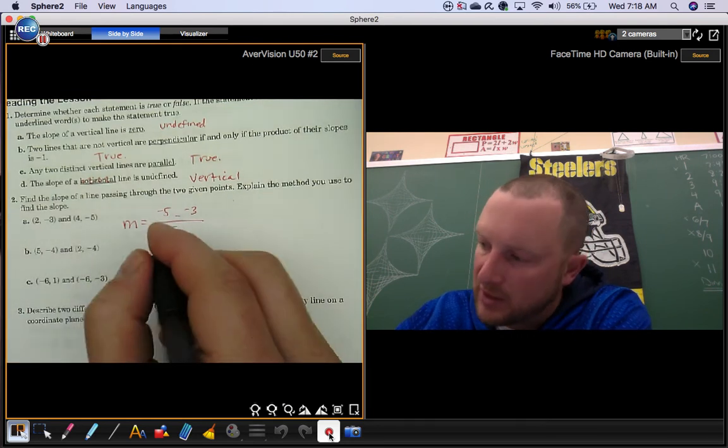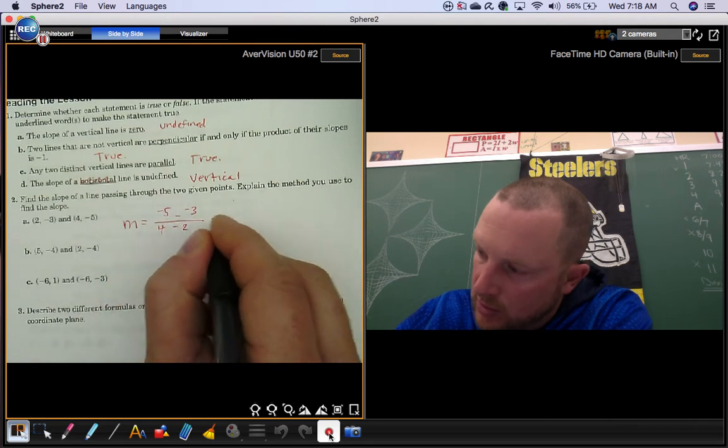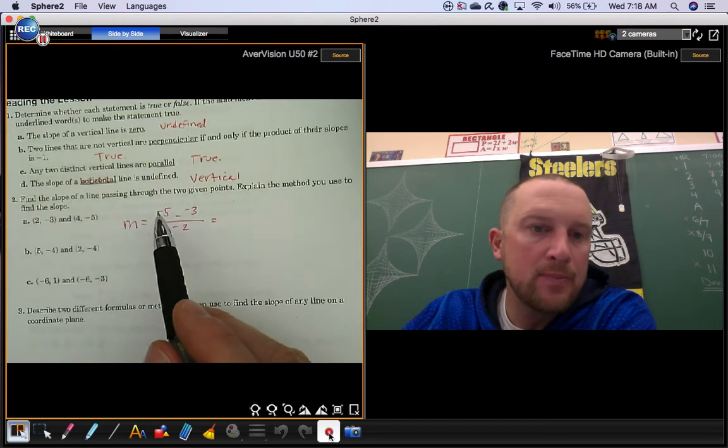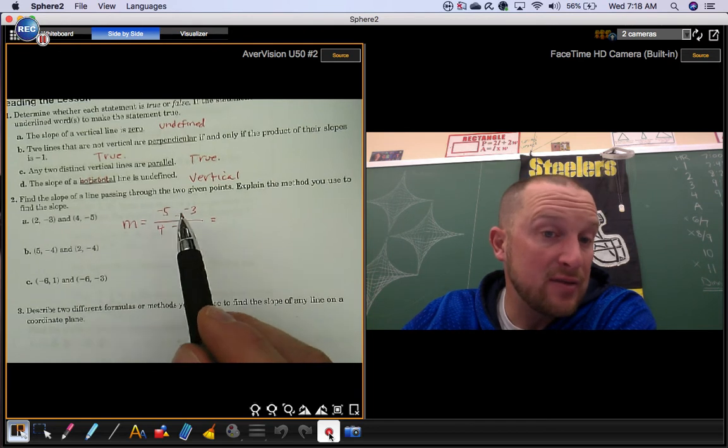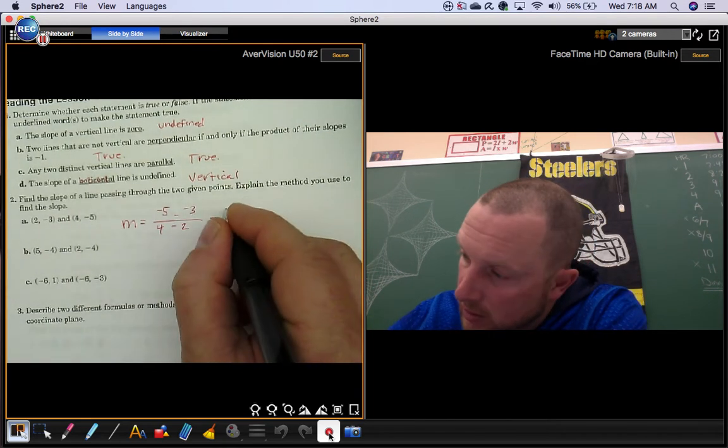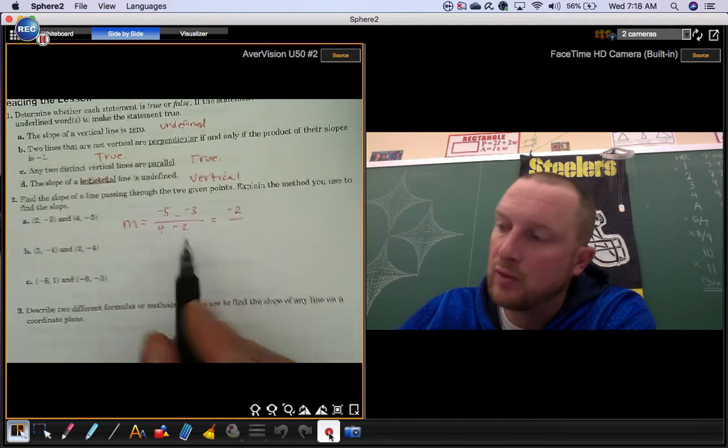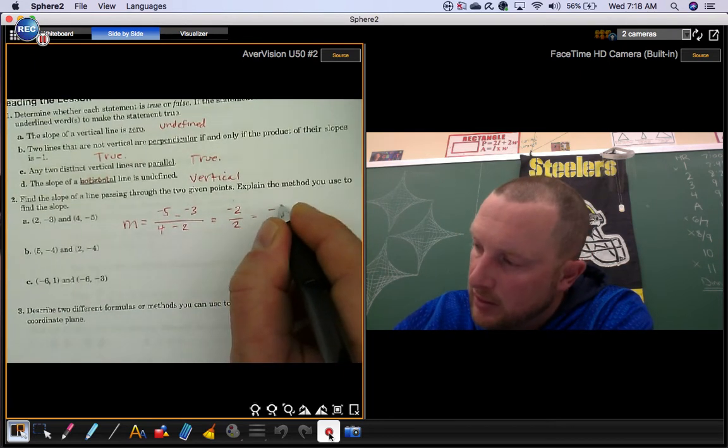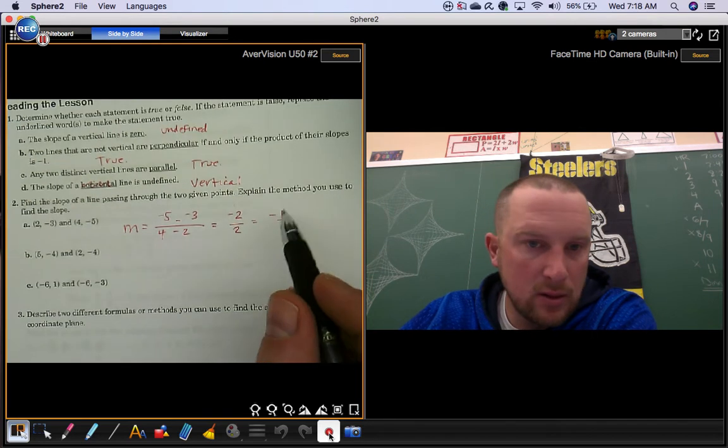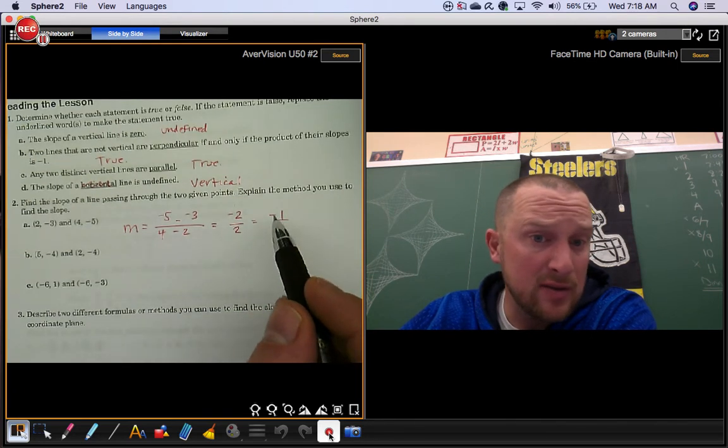We're going to subtract the x in the same order: four minus two. Negative five minus negative three, that's the same thing as negative five plus three. Four minus two is positive two. Make sure you reduce that. Negative one is what the fraction reduces to. This negative could be on top or down below, it doesn't matter.